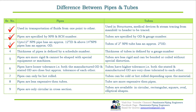Pipes up to 12 inch NPS have an approximate 12 inch ID, and above 14 inch NPS they have an approximate OD. Tubes of 2 inch NPS have an approximate 2 inch OD. The thickness of a pipe is defined by its schedule number, whereas the thickness of a tube is defined by a gauge number.